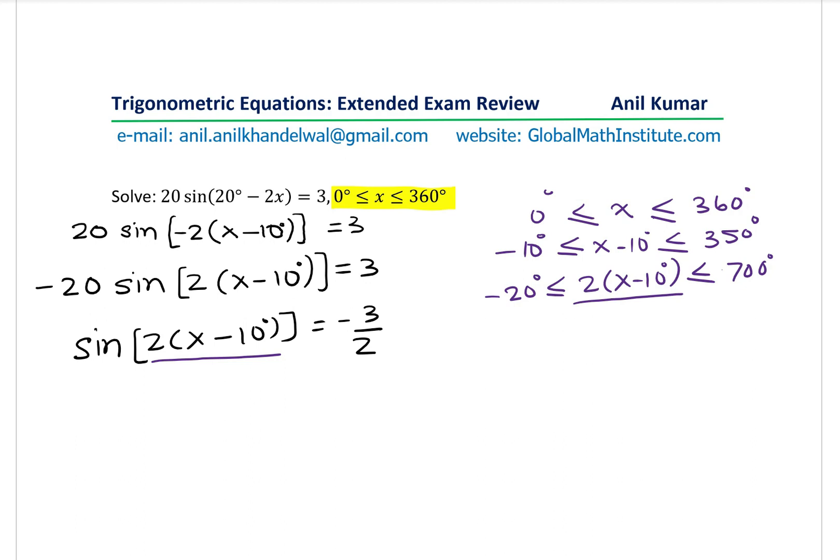So now we can find what is 2(x-10°) equal to. It is sine inverse of -3/20. In such cases, it's a good idea to really look into the solution in this fashion. When we are saying negative number, that means we are expecting the solution here. So let's find the acute angle.